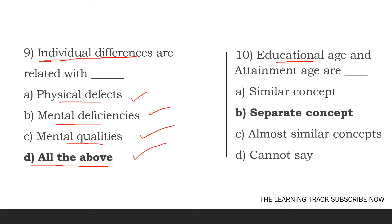Educational age and attainment age are dash. The options are similar, separate concept, almost similar concept, cannot say. The answer is separate concept — educational age and attainment age are a separate concept.